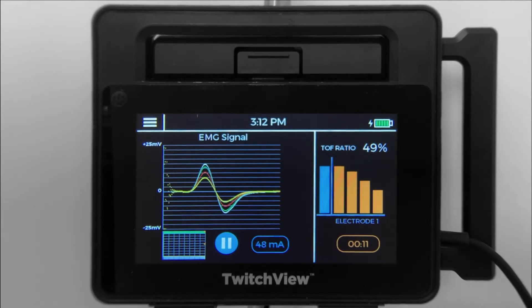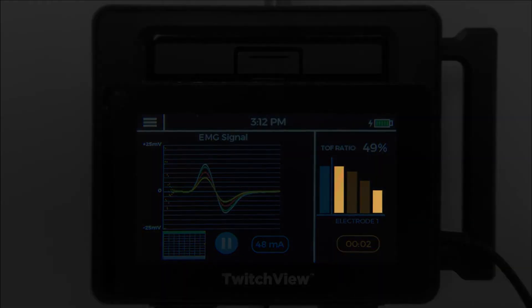After paralytic is administered, you will see pharmacodynamics in action. When four twitches are present, the monitor will measure the TRAIN-4 ratio, or the ratio of T4 to T1.